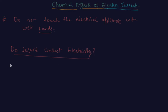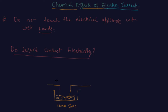We will check whether liquid conducts electricity or not. We will take some liquid like lemon juice in a beaker. We put the positive end and the negative end of the rods, and there is one filament — this filament is called a bulb.